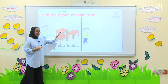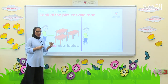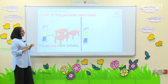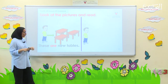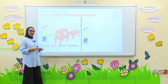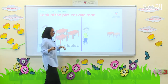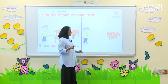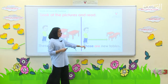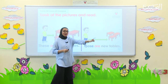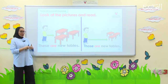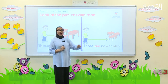Now, be careful. You can see that there are many tables — three tables. So, we are going to use the plural, not the singular one. Look at the pictures and read: These are new tables. Now, same tables, three tables — but far away, so we say: Those are new tables.